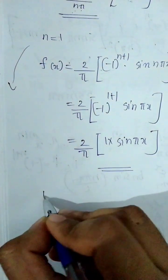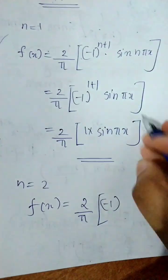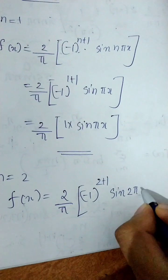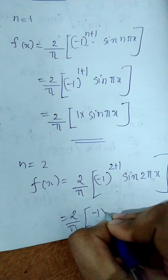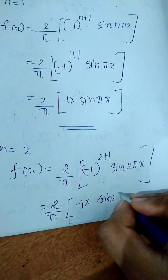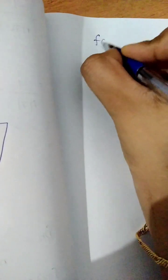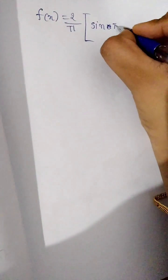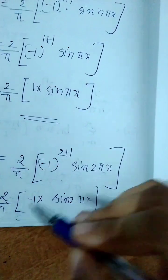For n equal to 2: minus 1 raised to 3, which is minus 1, times sin(2πx) divided by 2, giving minus 2 by π times sin(2πx) divided by 2. For n equal to 3: minus 1 raised to 4, which is plus 1, times sin(3πx) divided by 3. So f of x equals 2 by π times sin(πx) minus sin(2πx) divided by 2 plus sin(3πx) divided by 3, and so on.